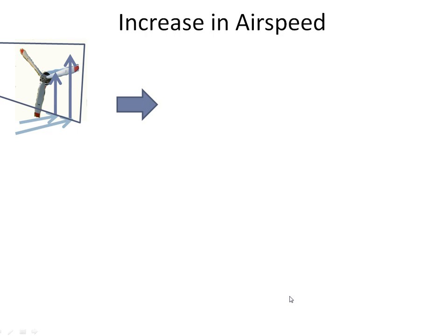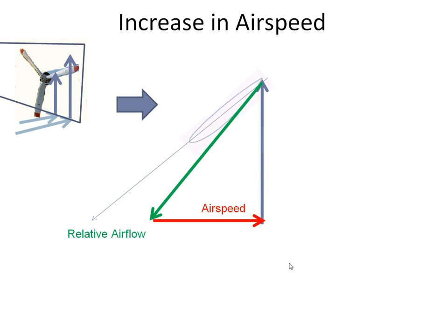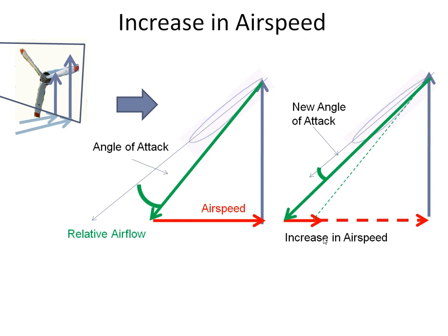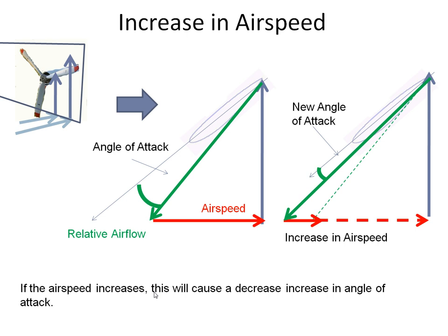Now let's examine what happens with a change in airspeed. There's our prop blade and chord line, the vertical component, the airspeed as it was, and the original angle of attack. Reproducing it on the right-hand side with everything the same, we now increase the airspeed. The resultant relative airflow shifts to this new position, giving us a new angle of attack. As we can see, the angle of attack has now reduced. So if airspeed increases, this causes a decrease in the angle of attack.